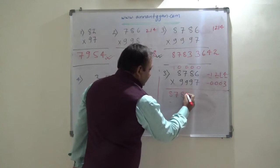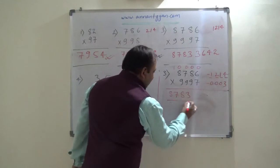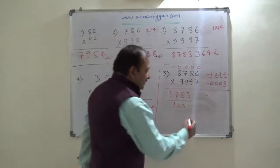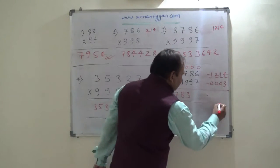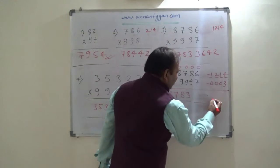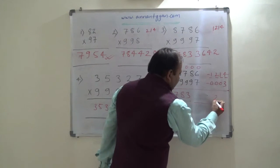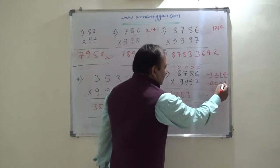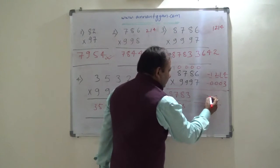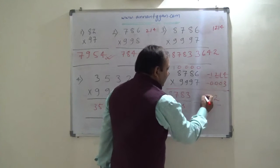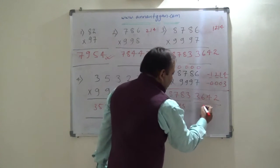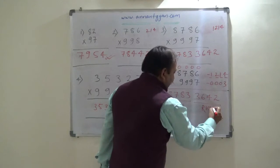So 8786 minus 3 gives 8783, which we write on the left hand side. We multiply both deviation values on the right hand side: 3 into 4 is 12 — write 2, carry 1. 3 into 1 is 3, plus 1 is 4. 3 into 2 is 6. 3 into 1 is 3. So right hand side is 3, giving us 87833642 — wait — right hand side is 4, 2 with carries.